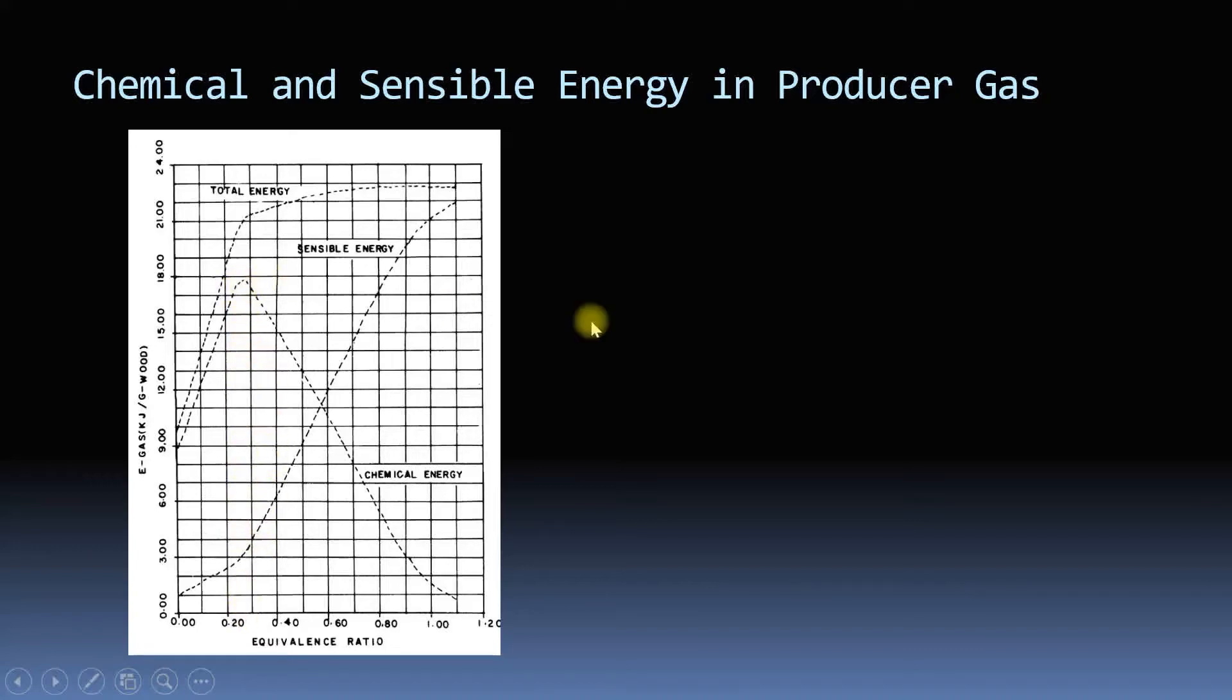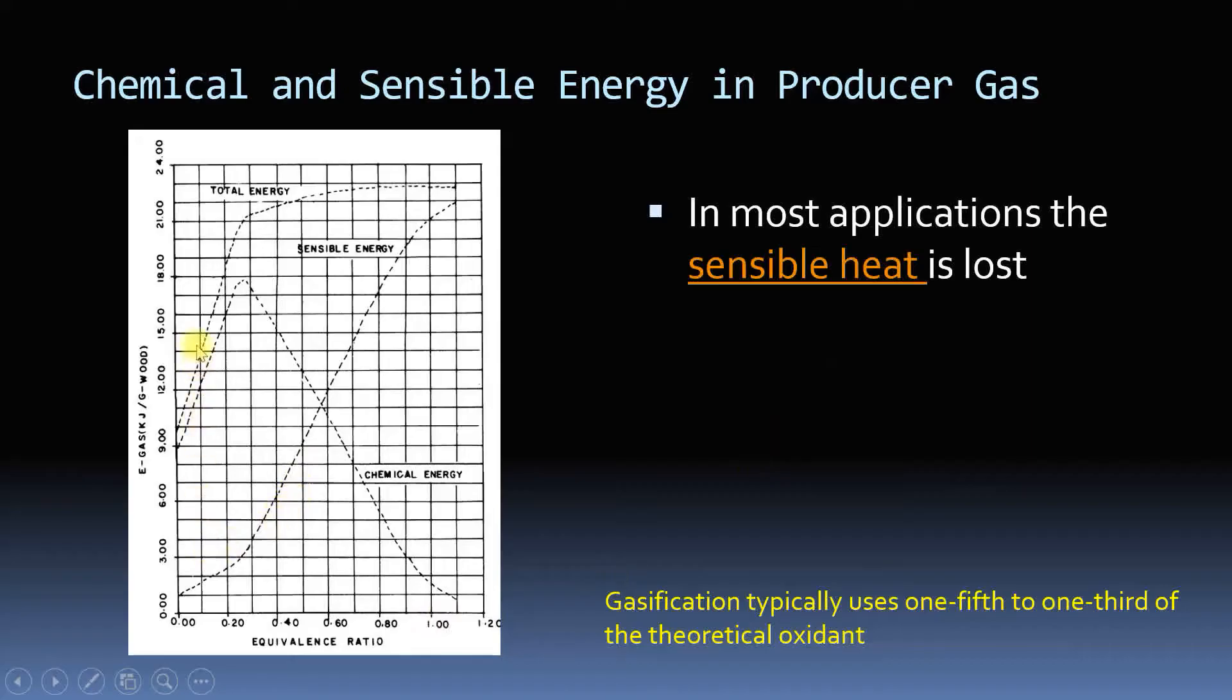This is the area where gasification occurs - approximately 0.27. Gasification typically requires one-fifth to one-third of theoretical oxidant. When you do gasification, in addition to chemical energy you will have some sensible energy in the gas which is normally lost because if you use it for engine you need to cool it.